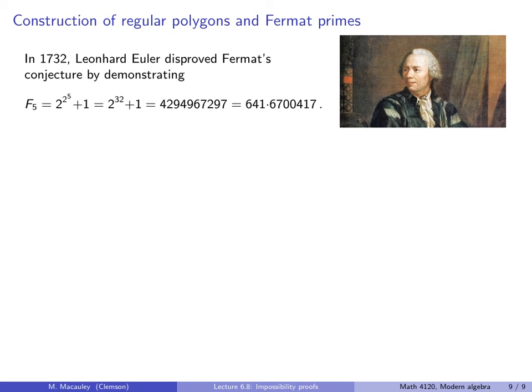Unfortunately for Fermat, in 1732, the Swiss mathematician Leonard Euler disproved Fermat's conjecture by demonstrating that the fifth Fermat number, f5, or 2 to the 2 to the 5 plus 1, or 2 to the 32 plus 1, this is some 4.2 billion, factors as a product of two primes, namely 641 times 6,700,417. Now, he did this all, of course, without the use of a computer.